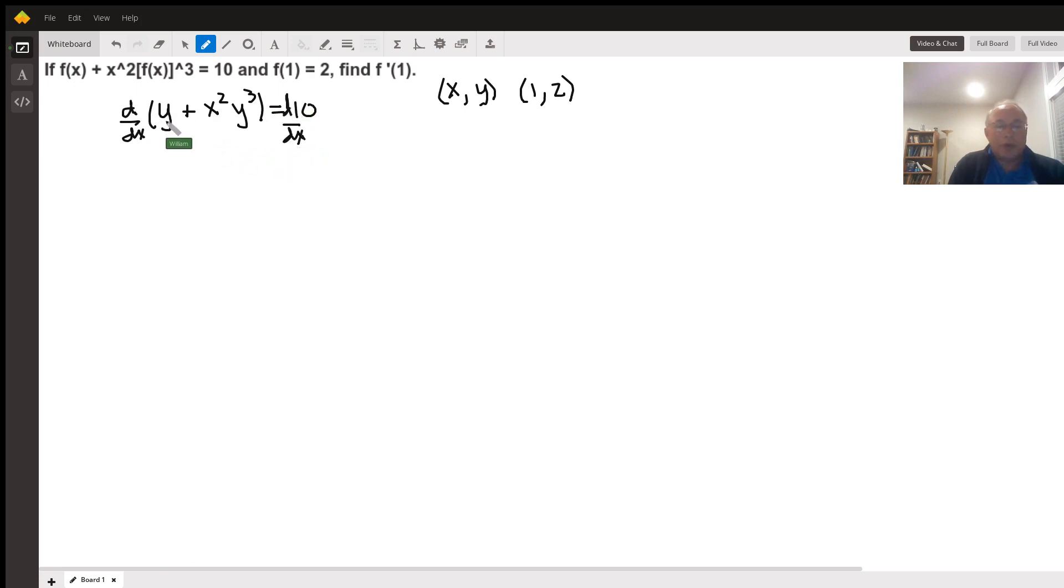The derivative of y with respect to x is dy dx. The second expression is a product, so I need to use the product rule. The product rule states that the derivative of the product of two things is the derivative of the first. So I'm going to take the derivative of x squared with respect to x.